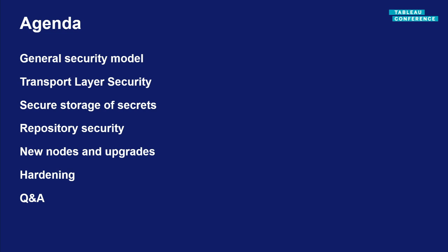We'll cover how we place files on disk, how we secure them, and how we run our services — a base layer to build on. Then we'll move to communications and service communication, and talk about TLS and how we secure that. We'll discuss how we secure all the secrets stored in Tableau Server, including auto-generated secrets for service connections and externally provided secrets. Then repository security — how we encrypt data stored in our database. We'll cover scenarios like adding new nodes and upgrades, and at the end there's an important hardening section covering what you can do to make your Tableau Server deployment even more secure. We'll have time for questions at the end.